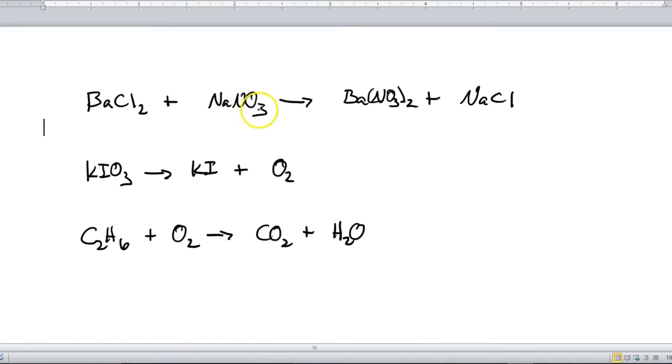Anytime you see a polyatomic on both sides of the equation like this, don't treat it like the individual elements. I'm not going to look at this as nitrogen and oxygen. I'm going to look at this as nitrate, one full complete ion. And trust me, that will actually make things a lot easier. So here we go.